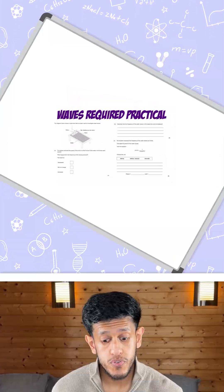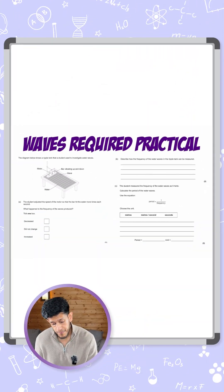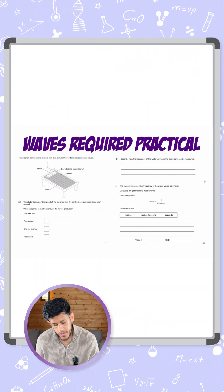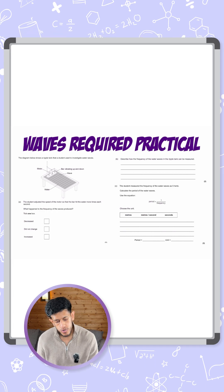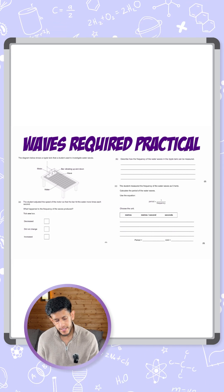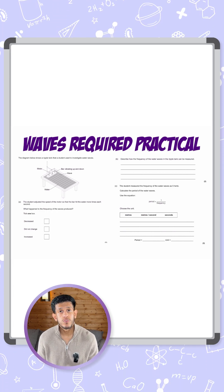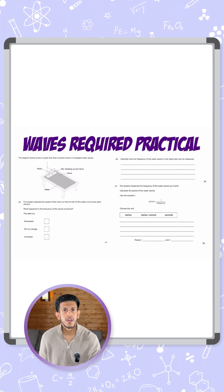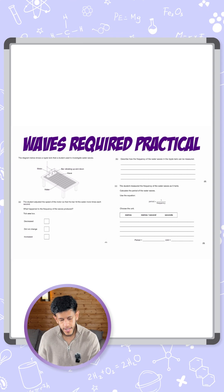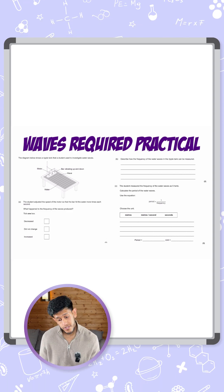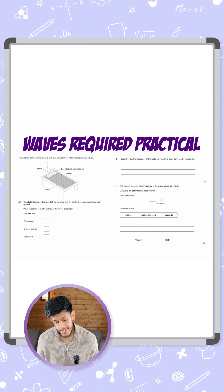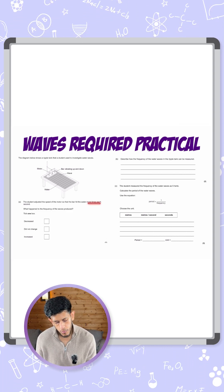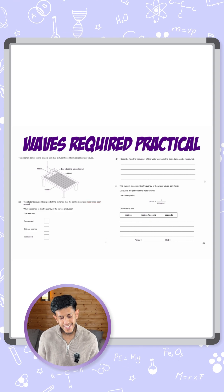Here's a question around the waves required practical. The diagram below shows a ripple tank that a student used to investigate water waves. You can see the motor there causing a bar to vibrate up and down, which produces the water waves across the ripple tank. The student adjusted the speed of the motor so the bar hit the water more times each second.